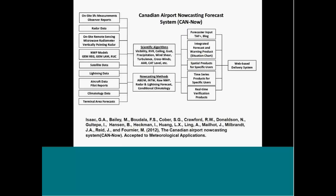So the CAN-Now, or the Canadian Airport Nowcasting Forecast System, has been described in this paper, which is available online now. It basically ingests all the surface measurements, the radar data, we have some on-site remote sensors, the NWP model data, satellite data, lightning data, aircraft data, climatology data, and terminal area forecasts. And it runs it through scientific algorithms,